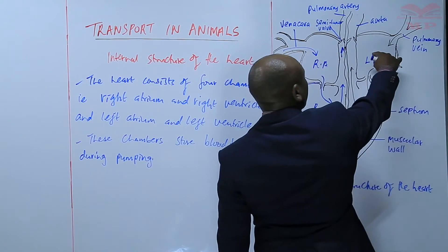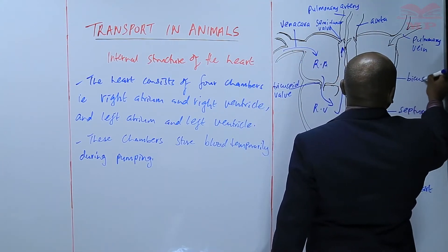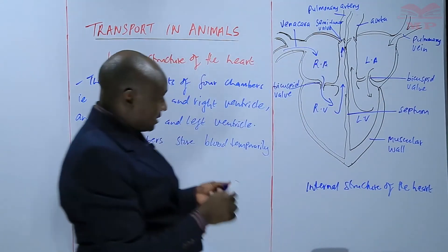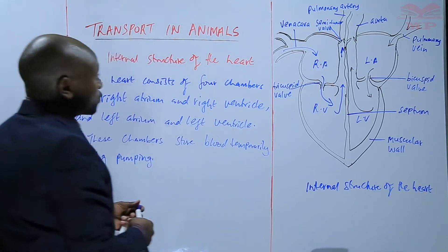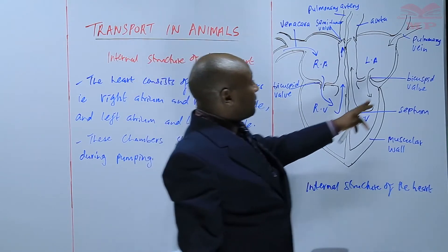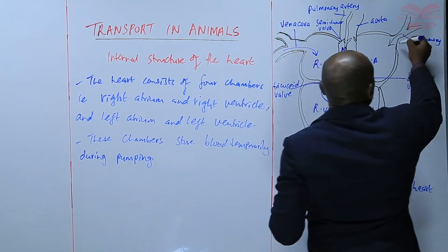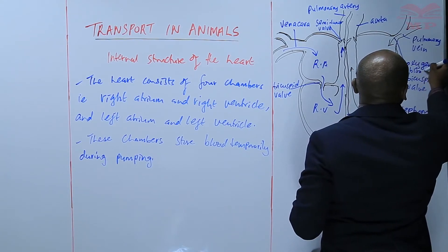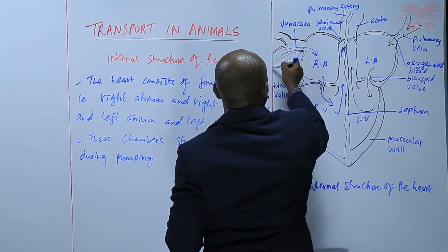We also have a valve between the left atrium and the left ventricle — this one we refer to as the bicuspid valve. The blue arrow shows the deoxygenated blood, which is on the right side of the heart, and the black arrow shows the oxygenated blood.